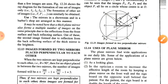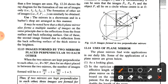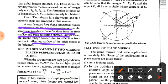It may be noted that a thick plain mirror also forms multiple images on the same principle, due to reflection from the front surface and the back reflecting surface. Out of these, the second image formed due to reflection from the back reflecting surface of the thick mirror is the brightest.